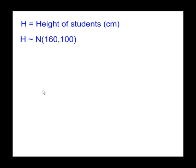Take this example here. H, the height of students, is a continuous random variable. And H is modelled by a normal distribution with a mean of 160, a variance of 100, which gives you a standard deviation of 10. If you square root of variance, you get the standard deviation.